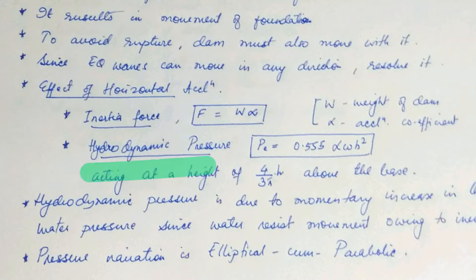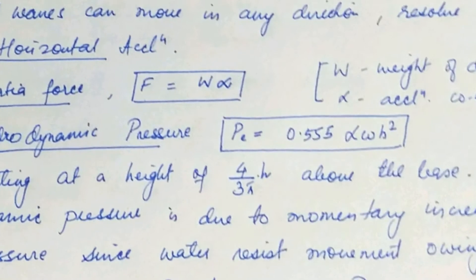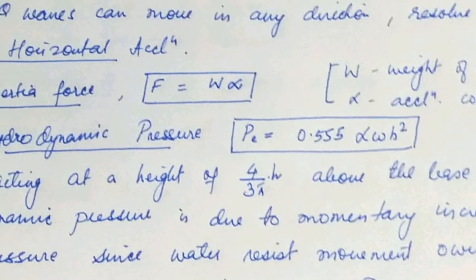Now let's see the hydrodynamic pressure. The horizontal acceleration of the dam and foundation towards the reservoir actually causes a momentary increase in water pressure, since the water resists the movement owing to inertia. And so the pressure is developed and that water pressure is called hydrodynamic pressure. This pressure variation is elliptical cum parabolic shape. And the hydrodynamic pressure is actually equal to 0.555 alpha wh square, and it acts at a height of 4 by 3 pi multiplied by h above the base.